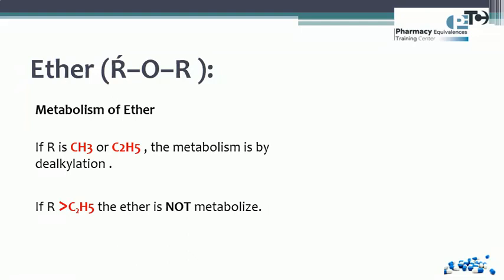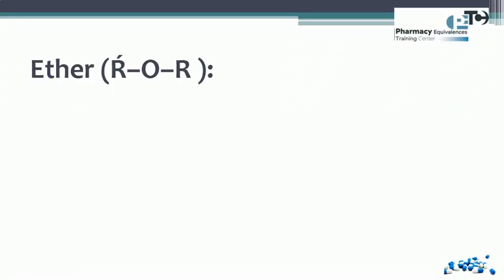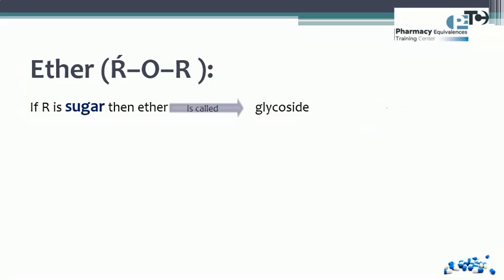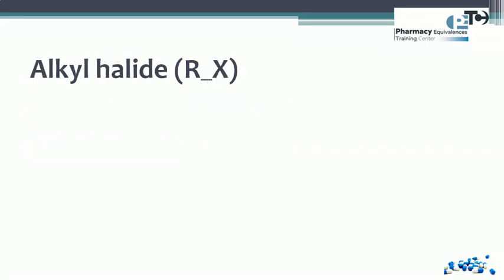Regarding the metabolism of ethers: if the R group is methyl or ethyl, metabolism occurs by dealkylation — removal of the alkyl group — yielding ROH and loss of the methyl group. If the R group is larger than ethyl (propyl, butyl, or bigger), the ether is not metabolized. If the R group is a sugar, the ether is called a glycoside and the linkage between the sugar and ether is called a glycosidic linkage. Any glycoside is an ether, but not every ether is a glycoside.